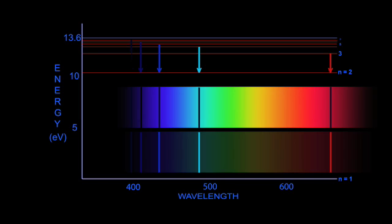When an electron jumps from the n equals 7 shell to the n equals 2 shell, ultraviolet light is emitted. No jumps to n equals 1 are shown because they are all in the deep ultraviolet.